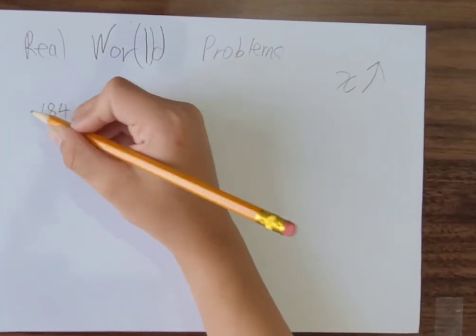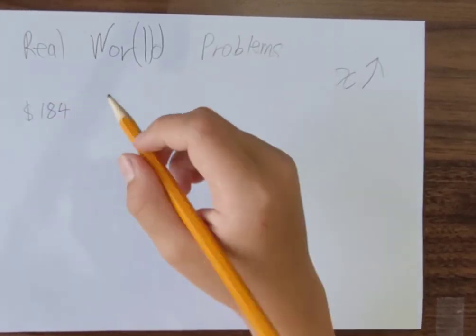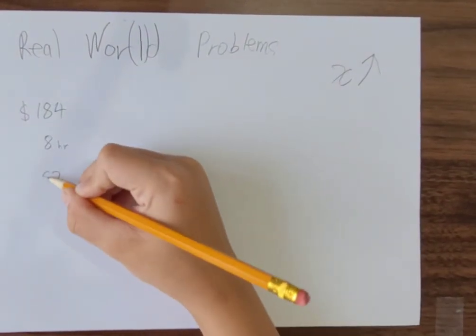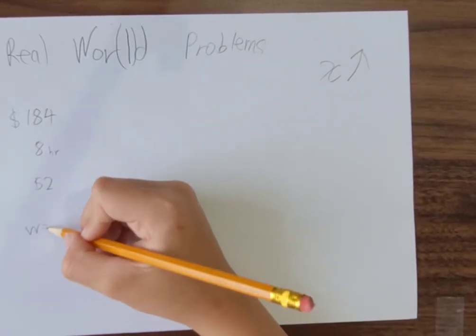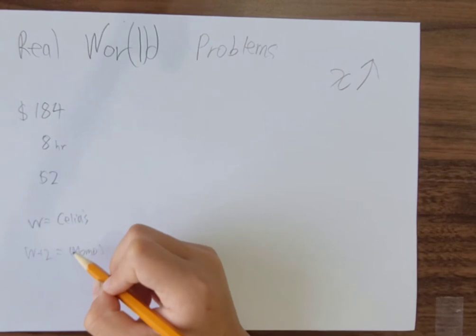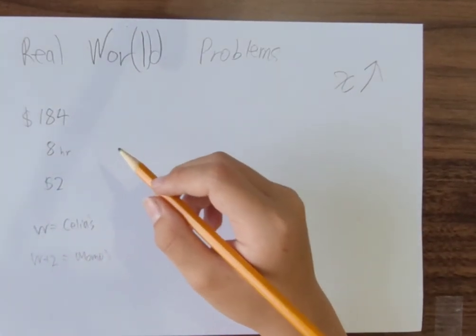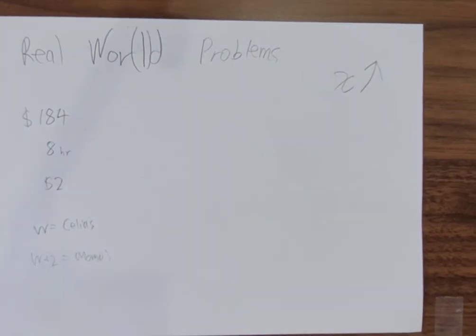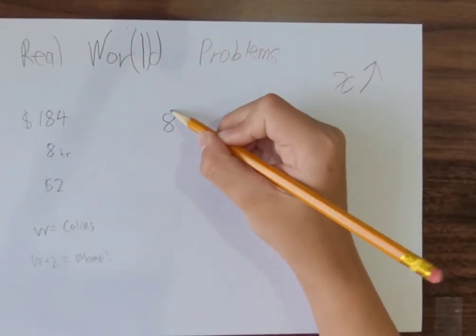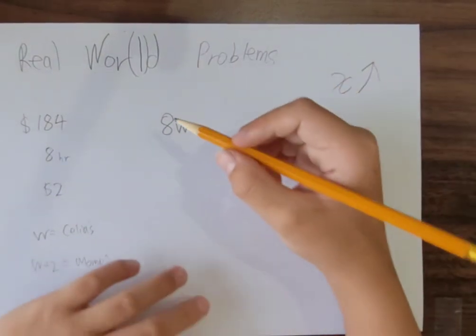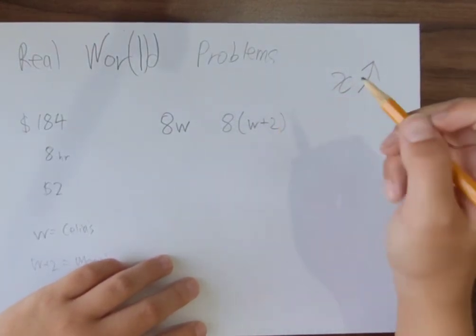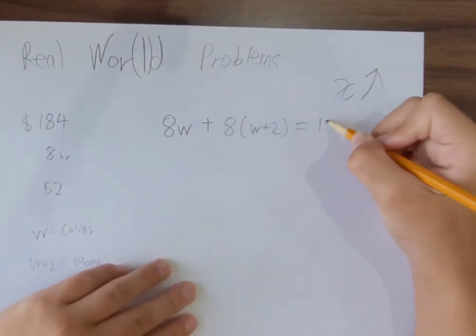The total pay is $184, the total hours worked is 8 hours, and the difference between Momo's and Celia's hourly wage is $2. Let's call W as Celia's hourly wage, and W plus 2 as Momo's. So in this problem, 8W is Celia's earnings, and 8 times (W plus 2) is Momo's earnings. When you add these together, you get $184.